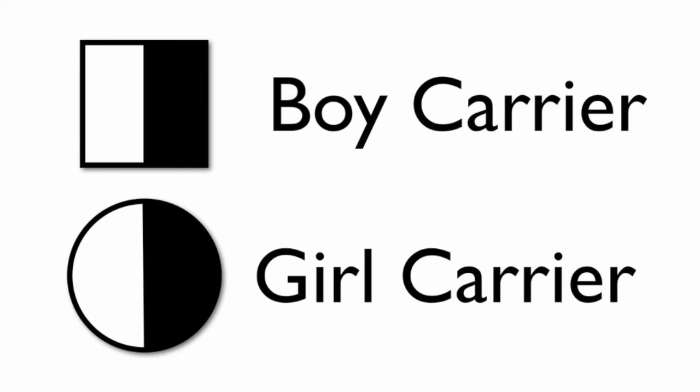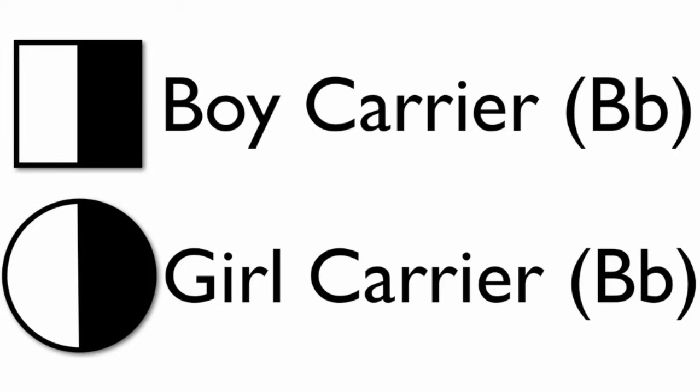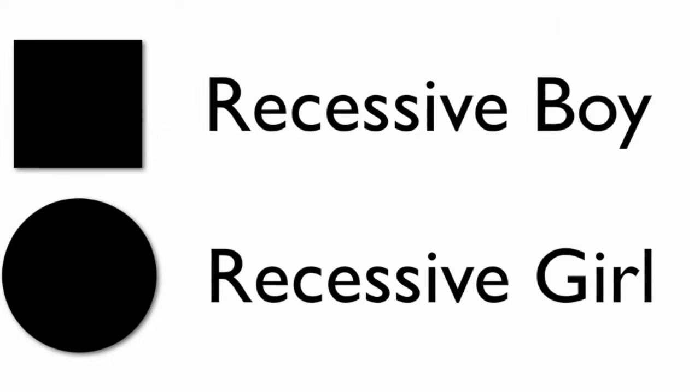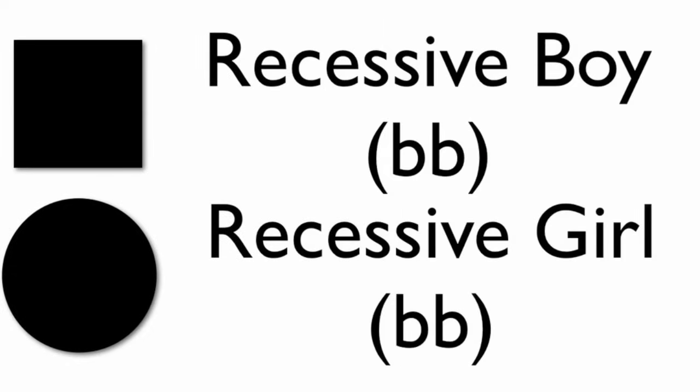A half-shaded shape represents a carrier. A carrier is someone who has one dominant and one recessive gene for a specific trait. If the shape is fully shaded in, we say that the person is showing the recessive trait. In our example, a recessive boy would have blonde hair and so would a recessive girl, and their genes would be two lowercase b's.